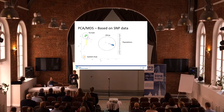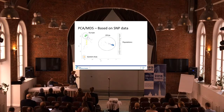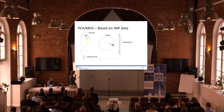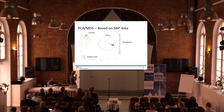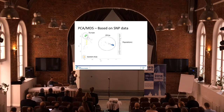We see that Africa kind of creates its own cluster to the right, with a lot of different African populations. We have an East Asian population that clusters tightly in the left corner. The Europeans cluster up and to the left, while we have other mixed populations in the Americas and Central populations elsewhere.